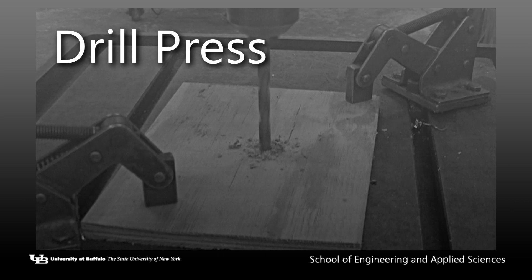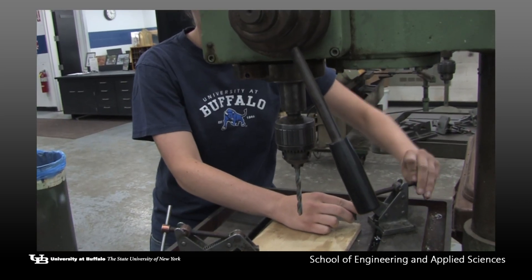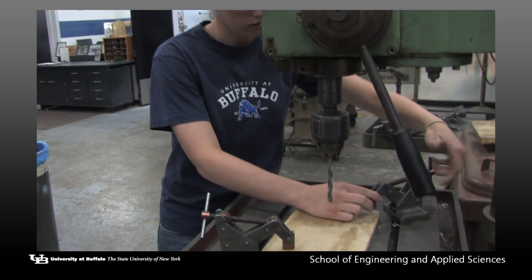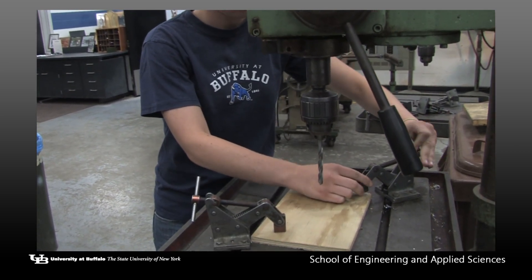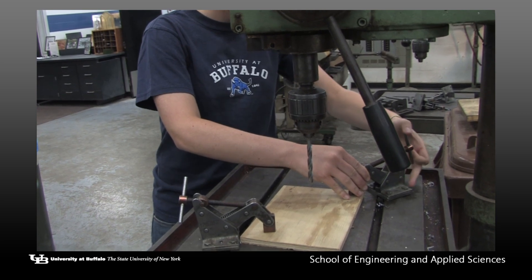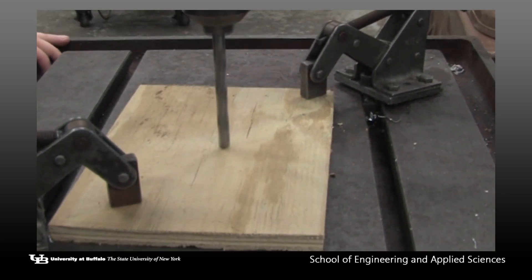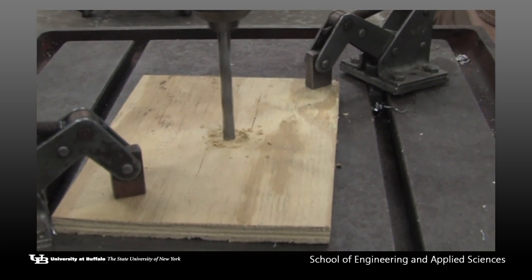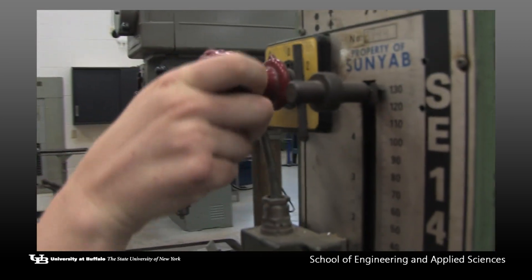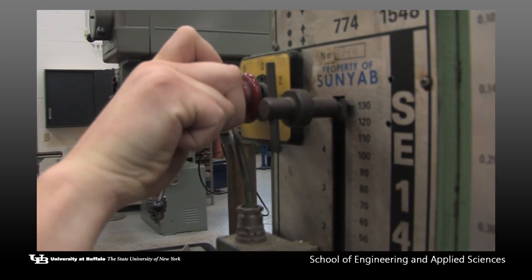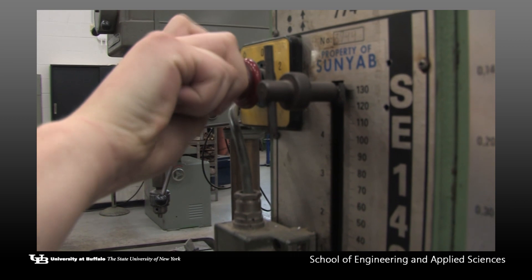A drill press is used to cut a hole in various materials. Before using one, be sure to secure your material in a hand vise or clamp the material down to the table. Unsecured material can quite easily get stuck to a spinning drill and quickly become a safety hazard. As with most machines, you should always consult with shop personnel about the cutting speed of the machine before use.